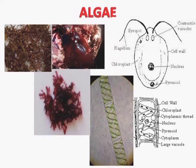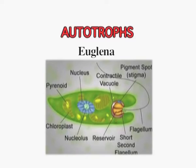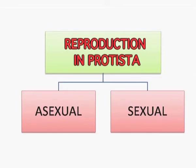Leishmania causes Kala-azar whereas Trypanosoma causes sleeping sickness in human beings. They can be autotrophs — for example, Euglena, which manufactures its own food with the help of chlorophyll. They can also be saprophytic or heterotrophic. Reproduction is either sexual or asexual, with asexual reproduction taking place by binary fission.